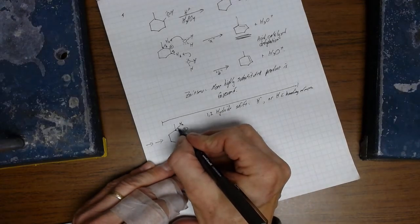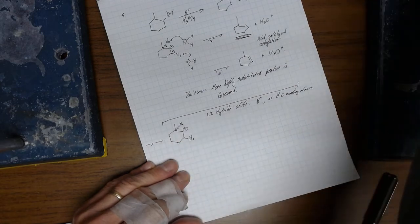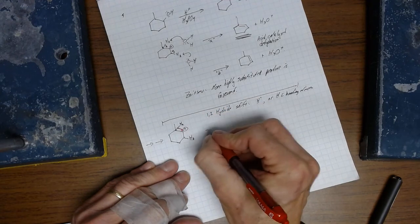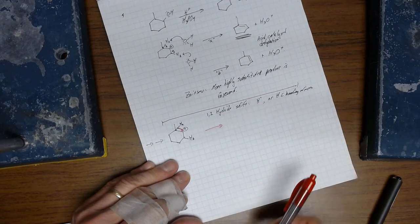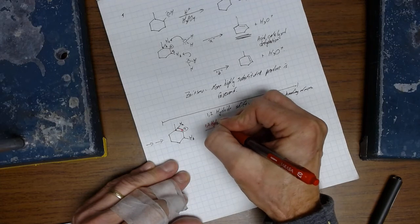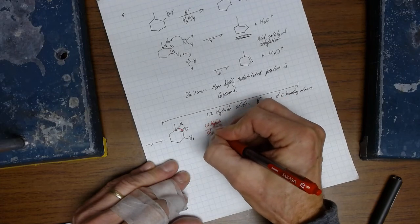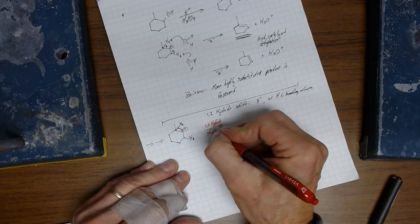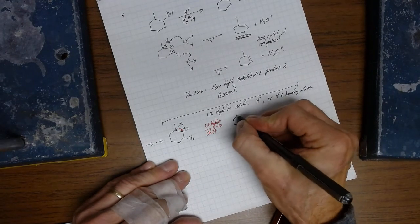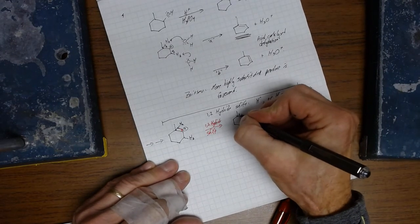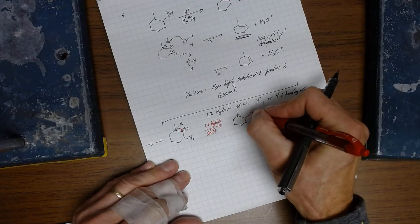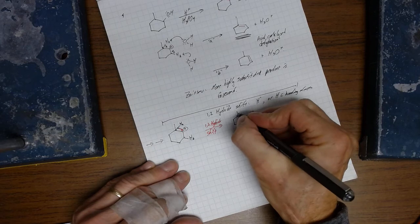So, this would be, maybe I'll use a red color to denote that. Hydride shift. So, these electrons move over here. And, what that produces is the result of a 1,2 hydride shift is this carbocation. The new hydrogen is out here. I haven't drawn in all the hydrogens, but we can form that carbocation.